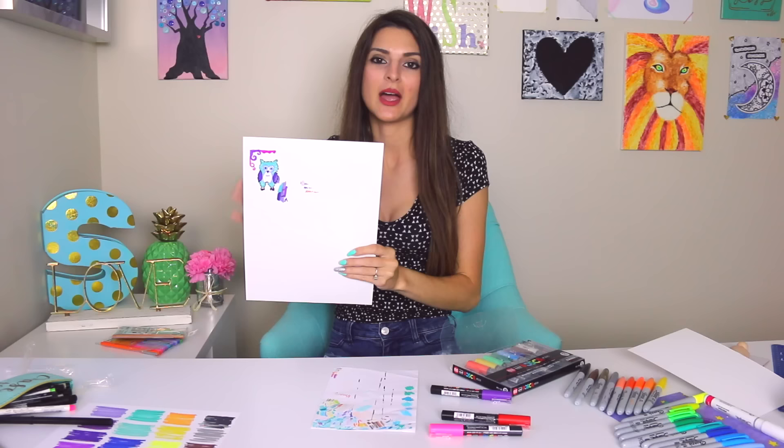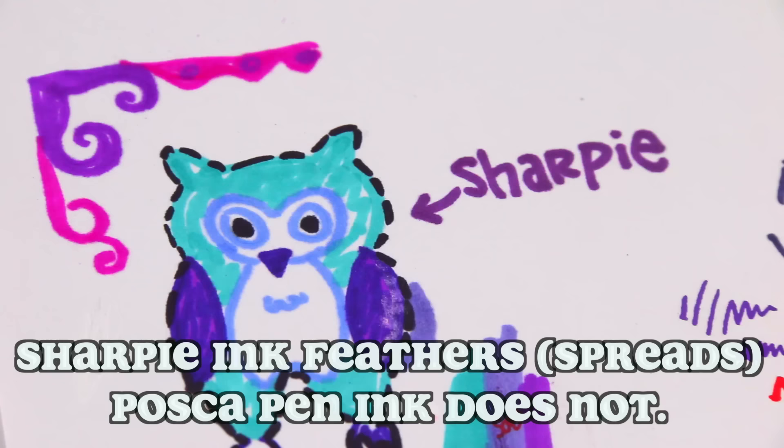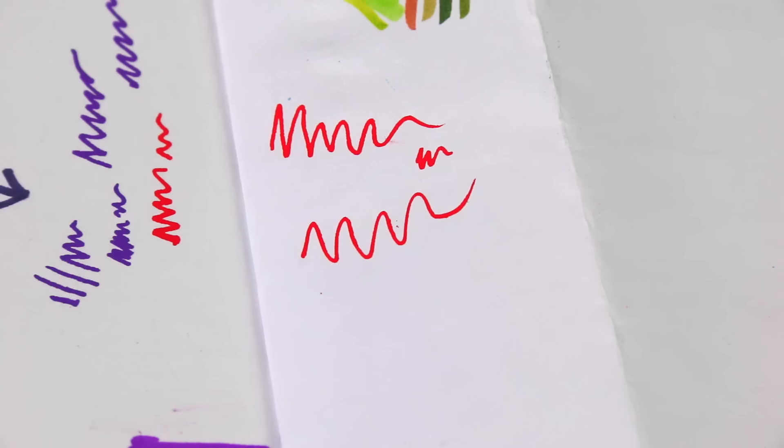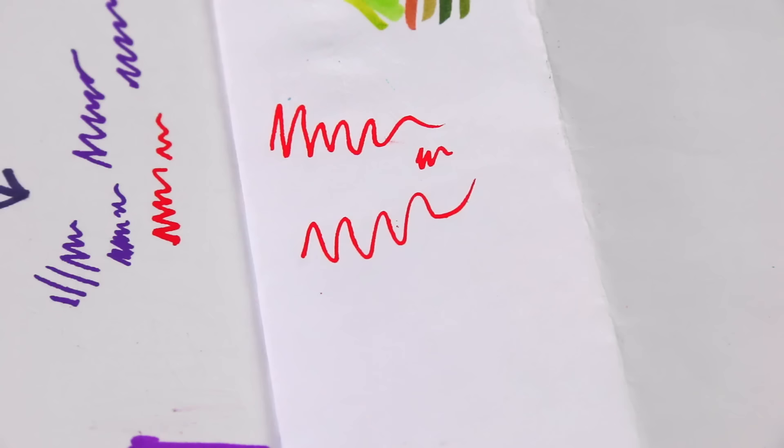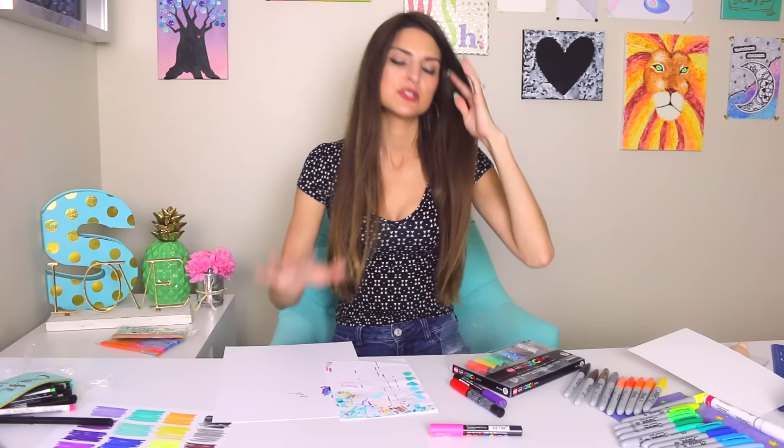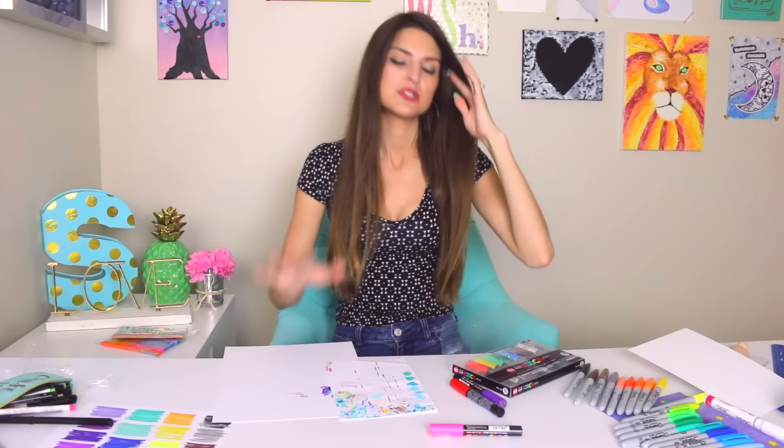I was just testing these on Bristol paper, which is basically like a watercolor paper thickness, but without the texture, so it's smooth, but it's also a little bit thicker than cardstock. I also have this sheet of really scrappy computer copy paper, and it works basically the same as it does on the Bristol, so you don't really have to worry about the type of paper you use.